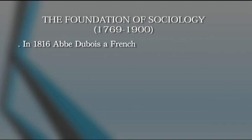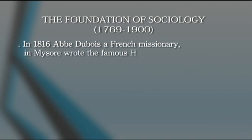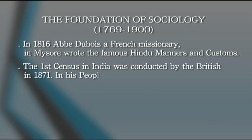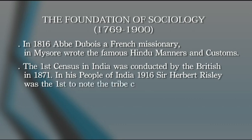In 1807, Francis Buchanan carried out a survey of the people of Bengal. In 1816, a French missionary called Abbé Dubois in Mysore wrote a book called 'Hindu Manners and Customs.' The first census in India was conducted by the British in 1871. Herbert Risley in 1916 wrote 'People of India,' the first time someone actually wrote on the caste system in India.